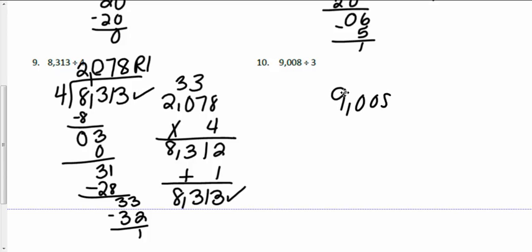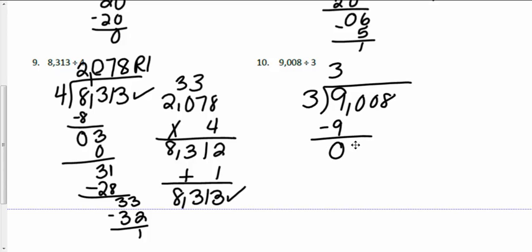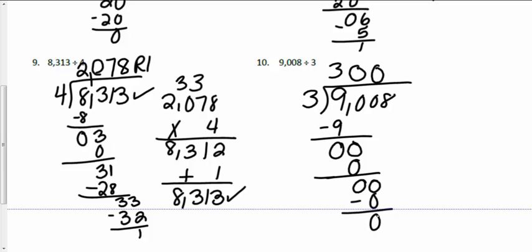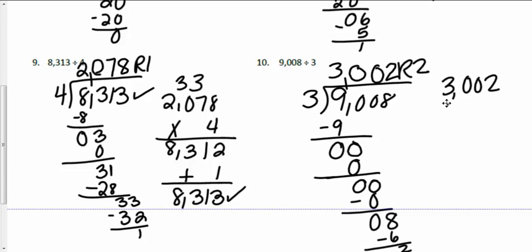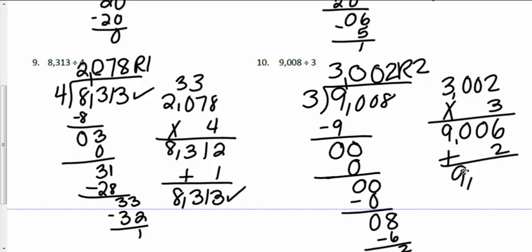Next: 9,008 divided by 3. Nine divided by 3 is 3, leaving no thousands remainder. Zero hundreds divided by 3 is zero; zero times 3 is zero. Zero tens divided by 3 is zero again; zero minus zero is zero. I bring down 8 ones: 8 divided by 3 is 2; 2 times 3 is 6; 8 minus 6 is 2, so remainder 2. My quotient is 3,002 remainder 2. I check: 3,002 times 3 — 2 times 3 is 6, zero times 3 is zero, zero times 3 is zero, 3 times 3 is 9 — giving 9,006 plus remainder 2 equals 9,008. Answers match.